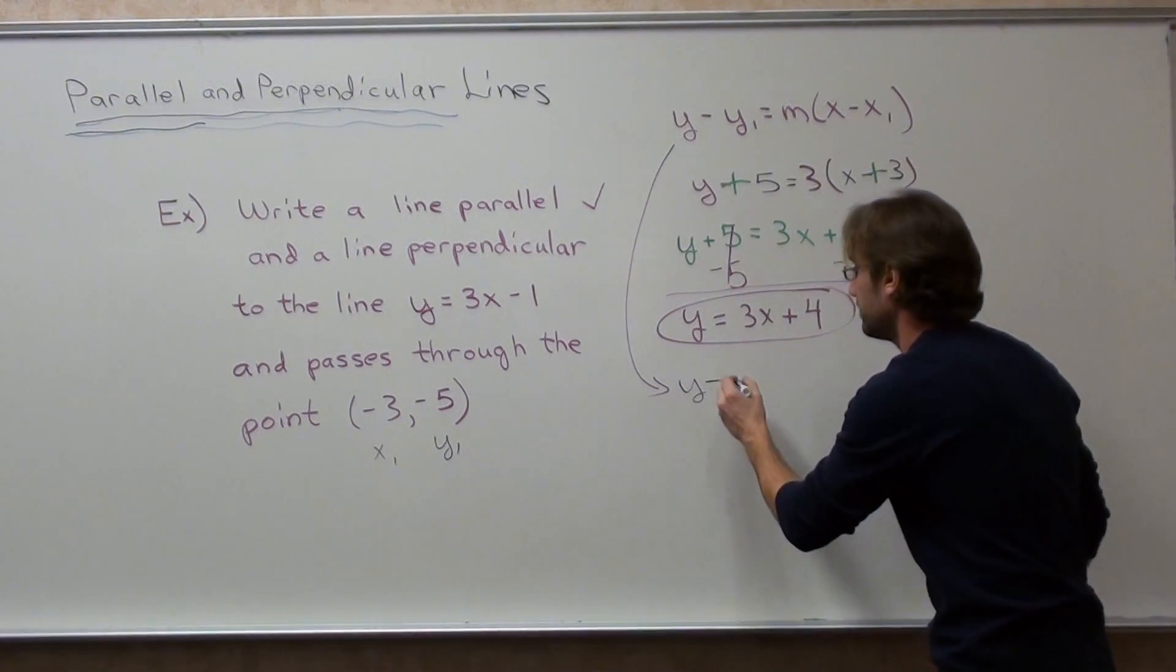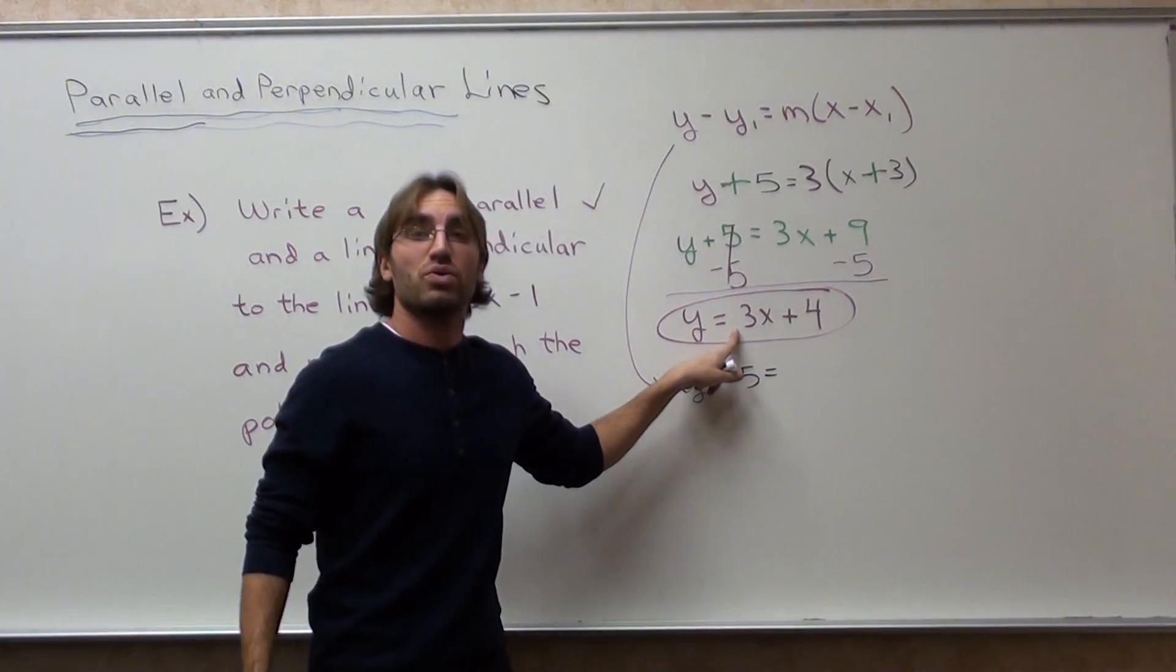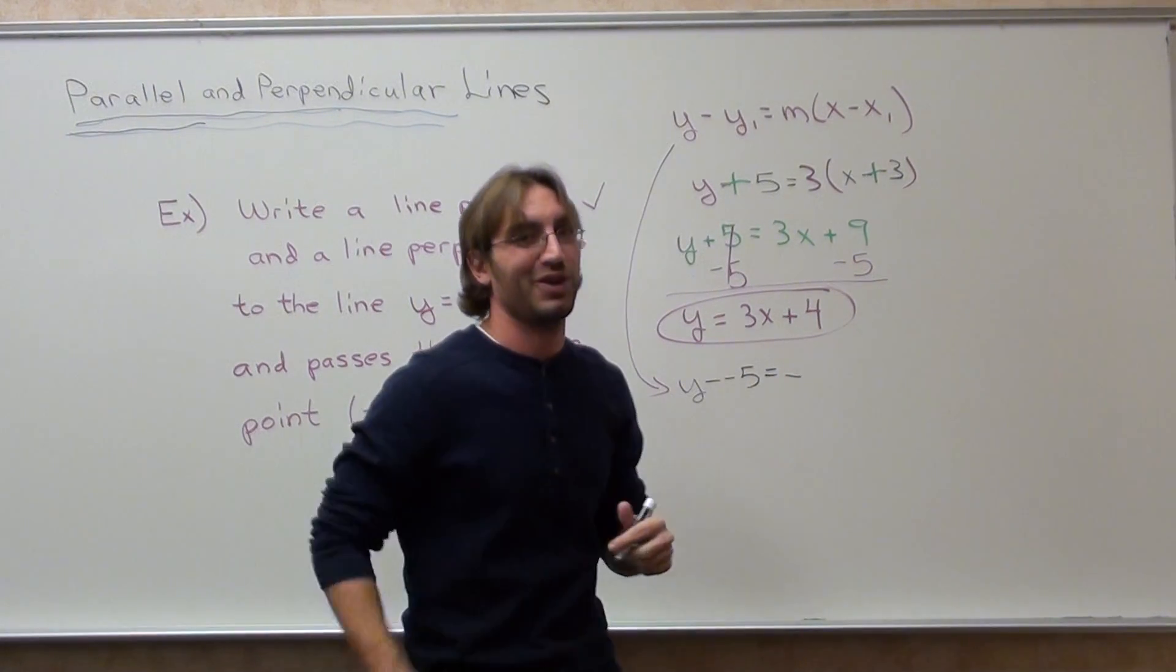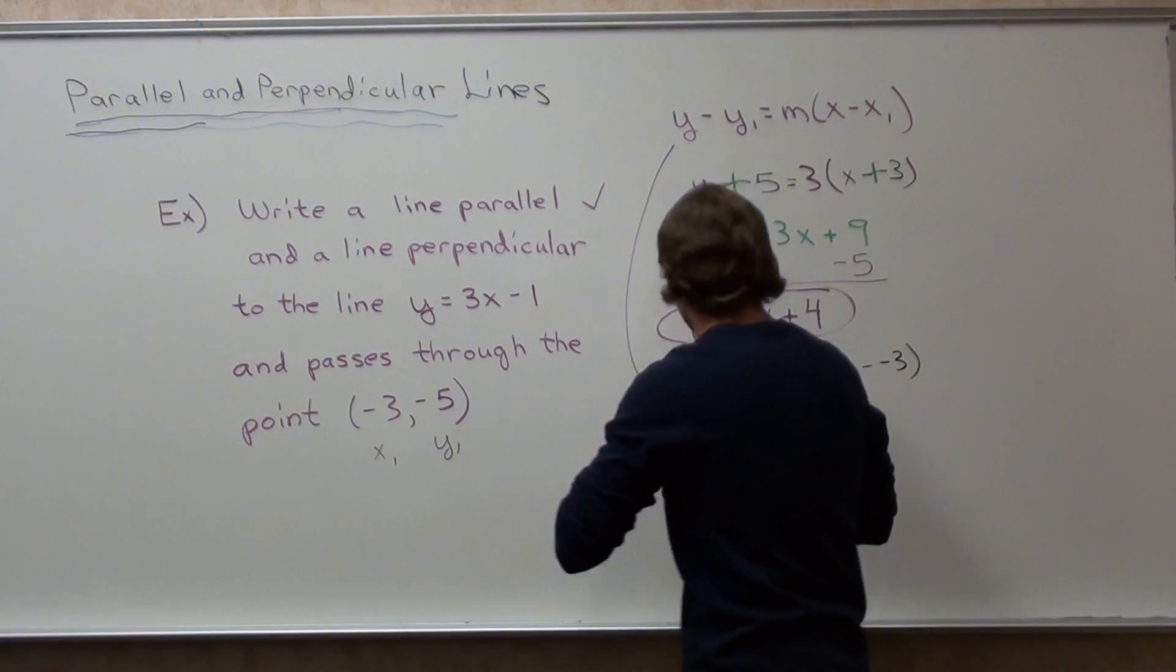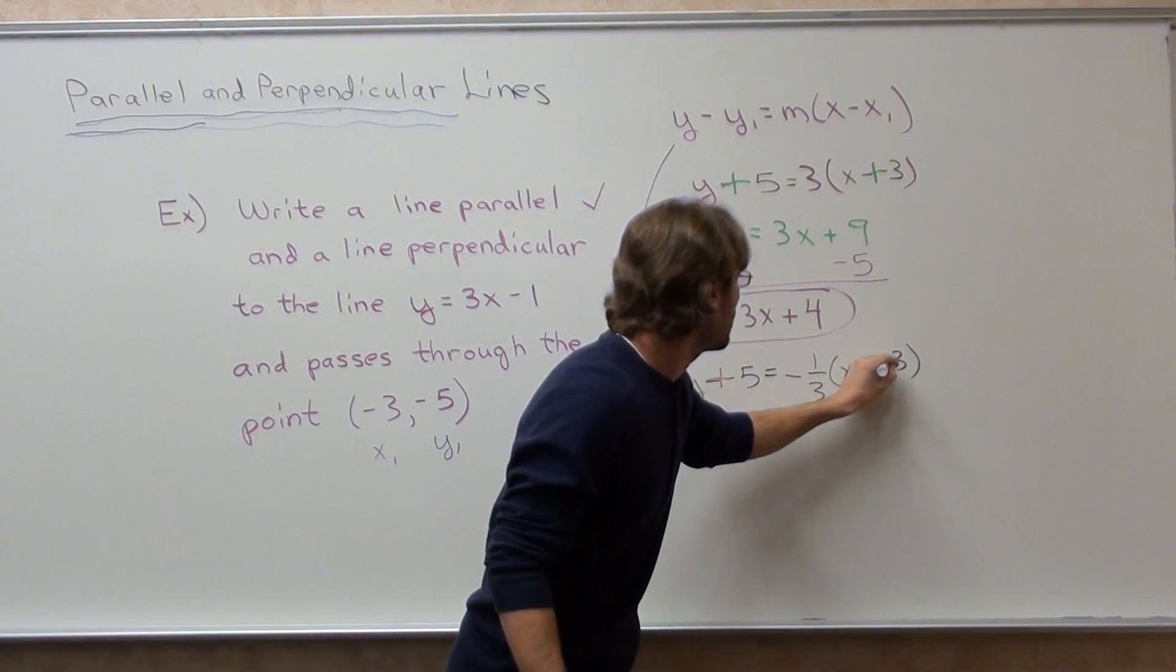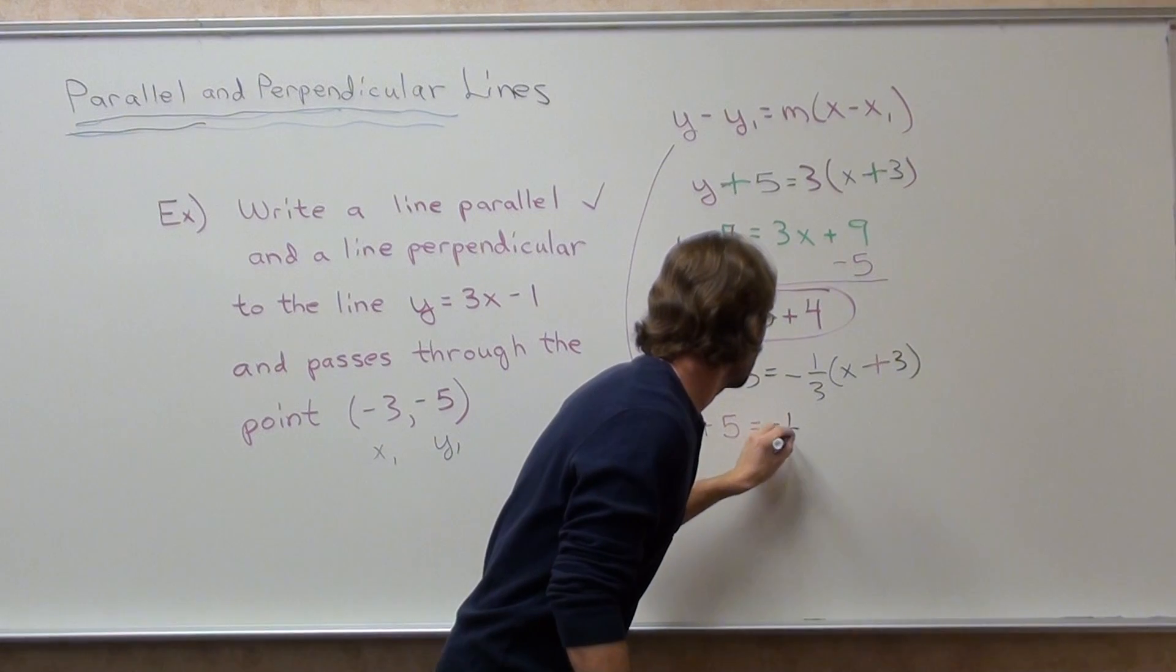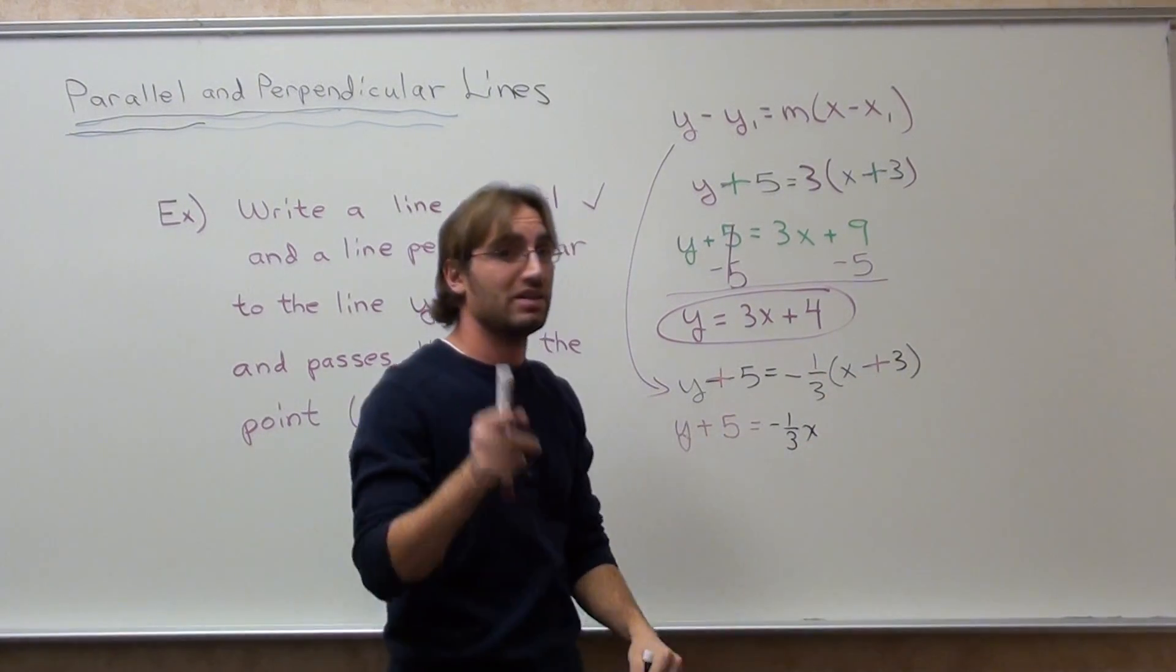So, y minus negative 5 equals my slope is the reciprocal, the opposite reciprocal of this. So, first of all, this was a positive, so the perpendicular slope is going to be a negative. And this was 3 over 1, so my reciprocal is going to be one-third. Two negatives in a row make a positive. You can go ahead and do it on that step. Negative a third times x is negative one-third x. And negative a third times 3. What's a third of 3? It's 1. What's a negative times a positive? It's negative.